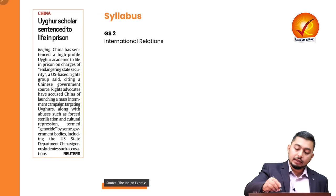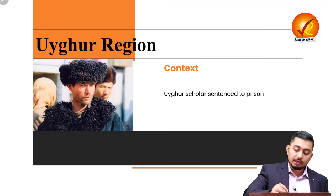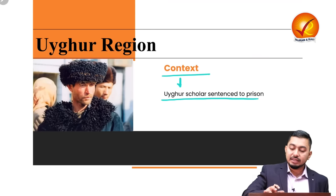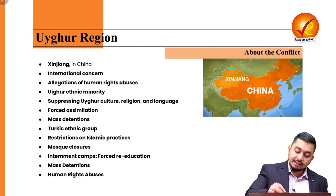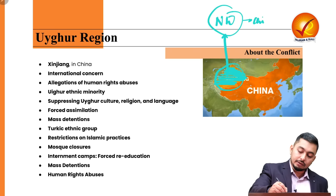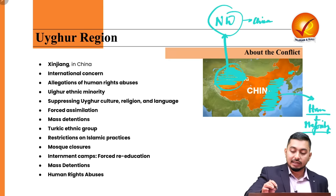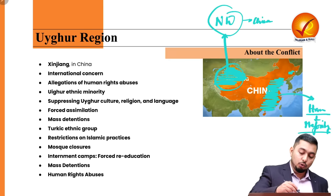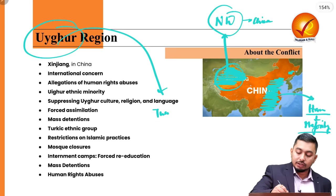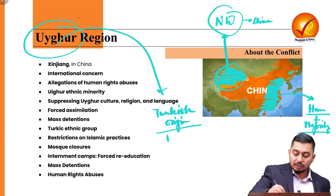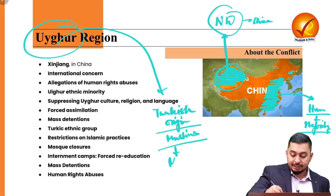The next article relates to the Uyghur region, pertaining to GS2 International Relations. A Uyghur scholar has been sentenced to prison. The Uyghur region, also known as Xinjiang, is on the northwest of China. The Han Chinese, the majority ethnic group, live in the coastal eastern regions of China, while the Uyghurs are essentially Turkish-origin Muslims who form the minority in this northwestern region. These regions are also sparsely populated due to the difficulties of geography.